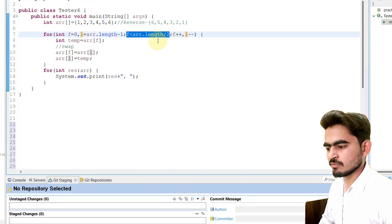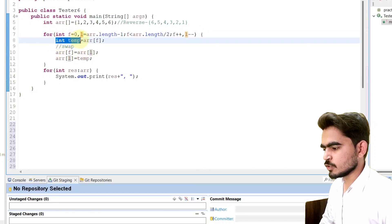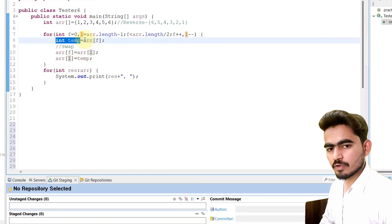In each iteration, we will increment the value of f, simultaneously we will decrement the value of l. Here I declare one variable, named it as temp. Here I am going to store the value of array of f.